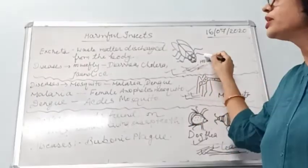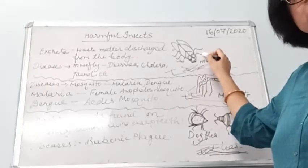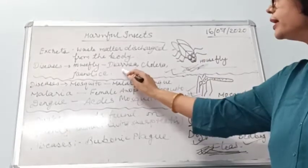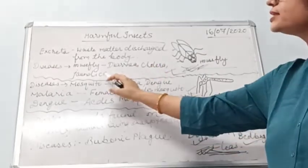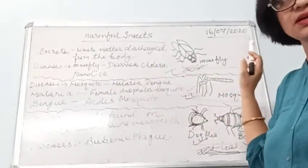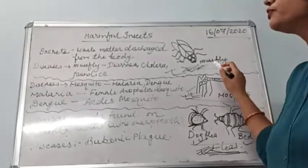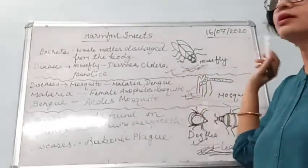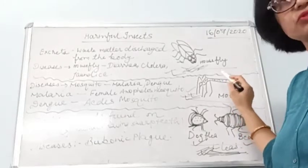When we eat those food items, the germs get transferred into our stomachs, and in this way diseases occur. The diseases caused by the housefly include diarrhea, cholera, jaundice, stomach ache, and so on.